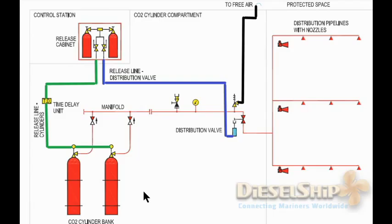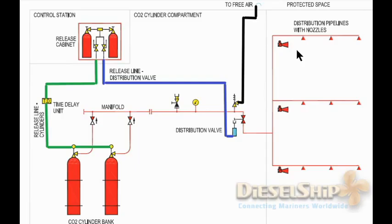Let's now concentrate only on the operation. We have the control station, also called the valve release cabinet or control cabinet. In order to flood CO2 inside the engine room, master mustering must be done first — a headcount at the muster station, order from the master — and with all confirmations per company policy, the master will give orders to the chief engineer to release the CO2. It is the chief engineer who has to release the CO2 into the engine room.